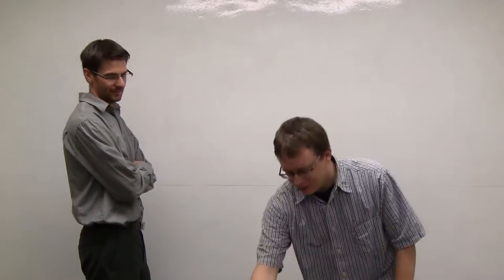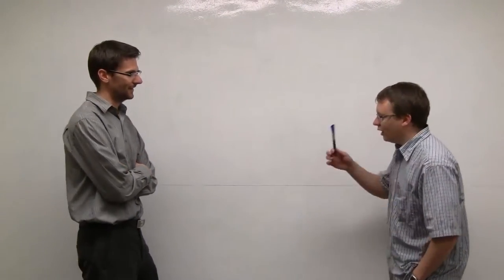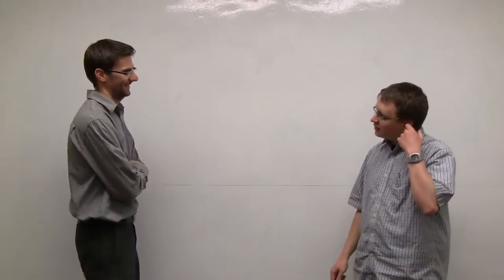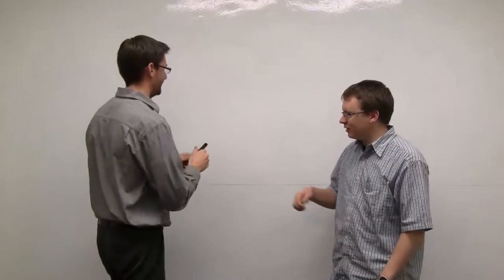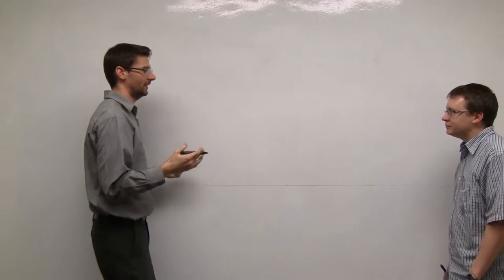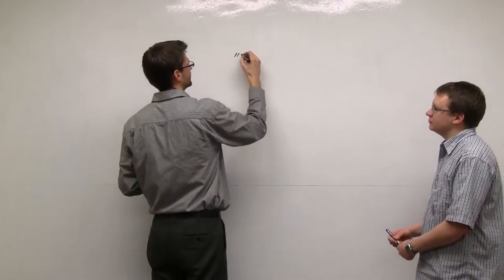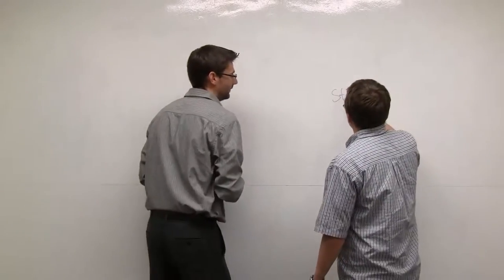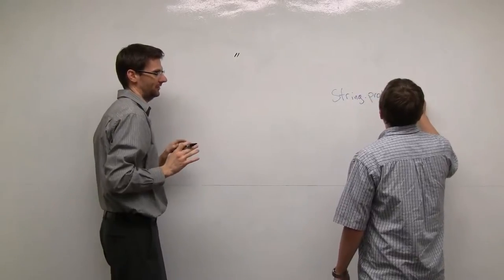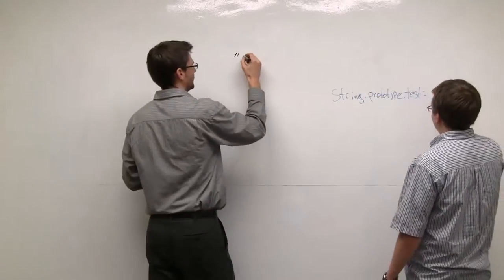We learned some stuff. We said that everything in JavaScript is an object, and the first question we need to answer is why would we think that. There are lots of reasons — let's lay out the evidence for everything being an object. One of the first is if you fill the prototype with something like String.prototype.test and write a function on that — a primitive property on the prototype, not even a function — it would actually access it.